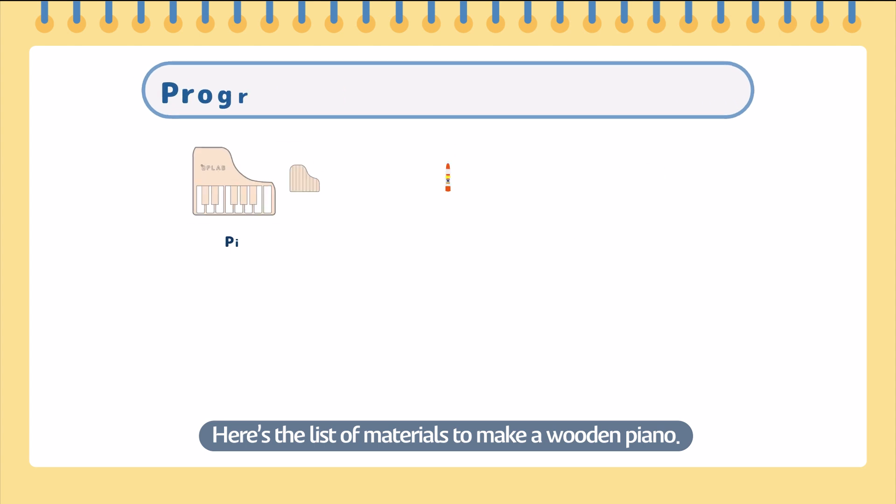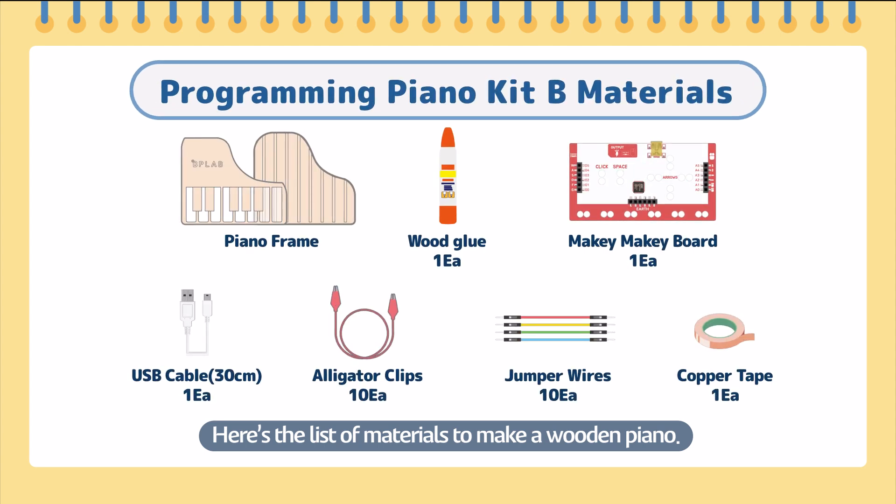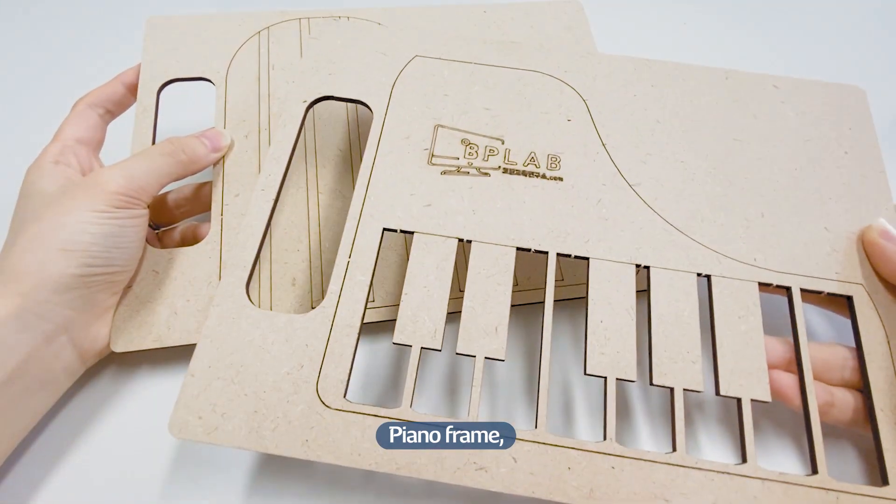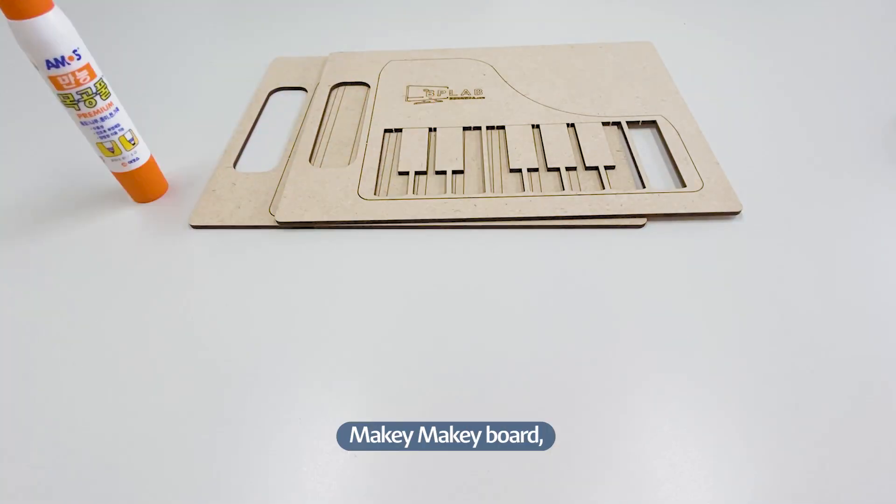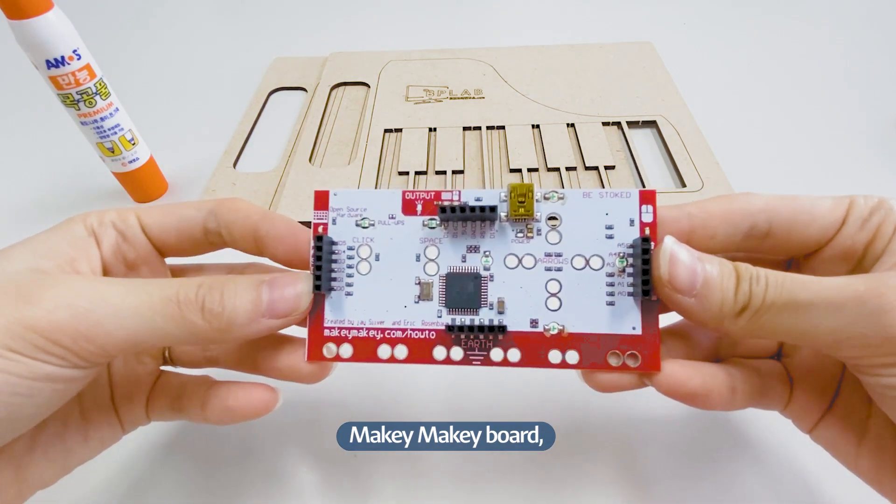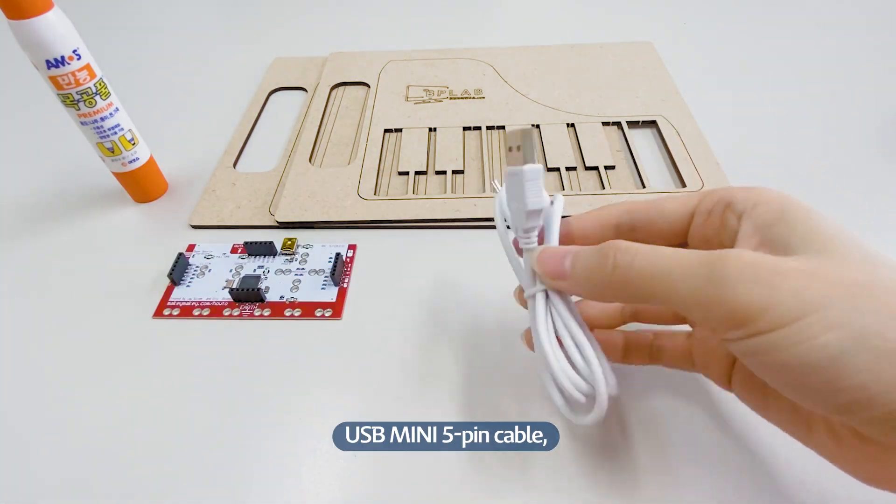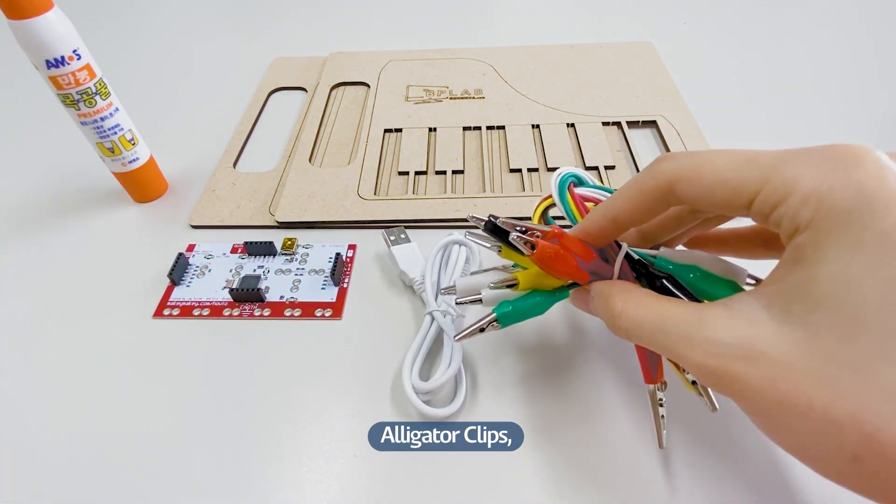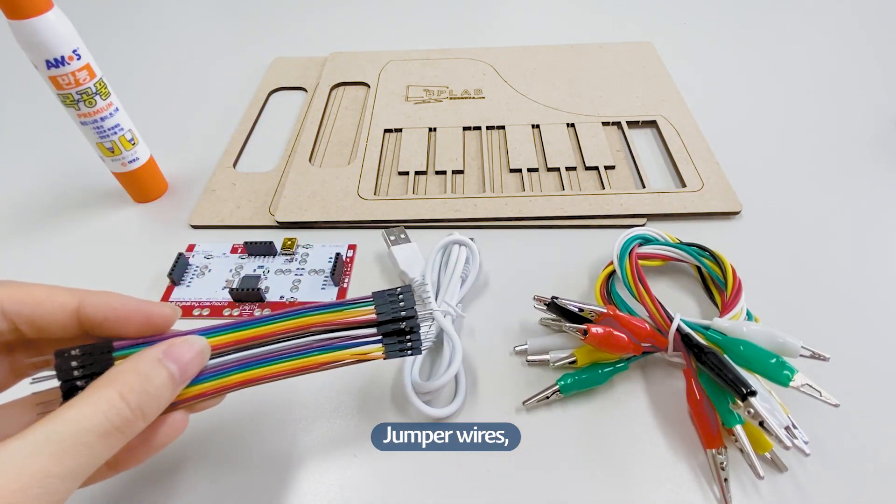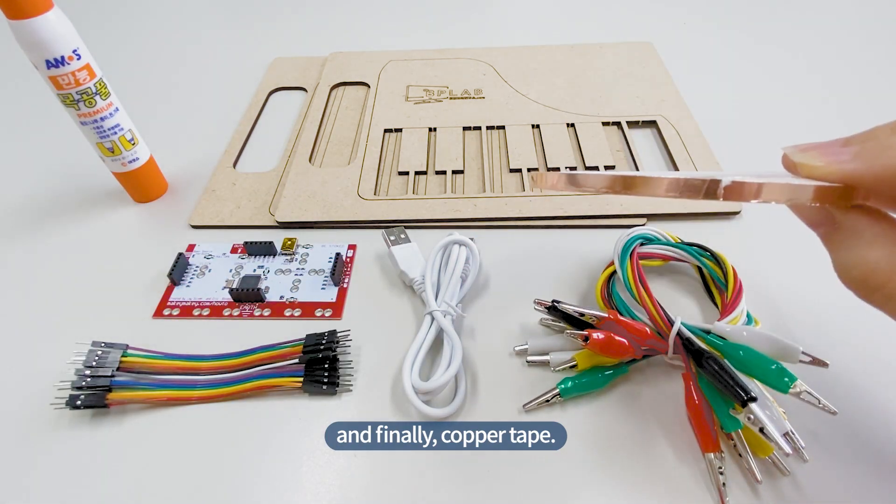Here's the list of materials to make a wooden piano: piano frame, wood glue, Makey Makey board, USB cable, alligator clips, jumper wires, and finally, copper tape.